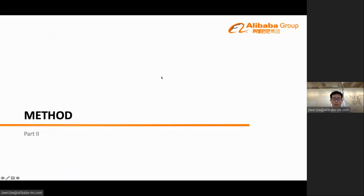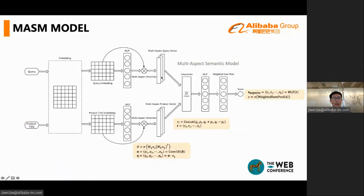So now, I start to introduce our method. Our model is an improvement of DSSM-like model that the query and the products will be encoded separately to produce vector representations, and the relevance score is computed based on the query and the product vector. In order to improve the representation ability of the model, we propose multi-aspect data interaction that computes the interaction of multiple query and multiple product vectors.